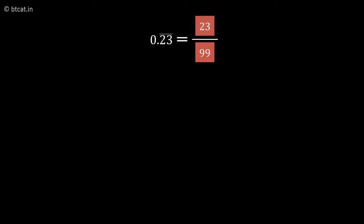0.23 bar equals 23/99 because the bar is on two digits, 2 and 3. 0.23 bar is 0.23232323 and so on. The answer in p/q form is 23/99.